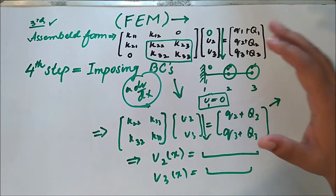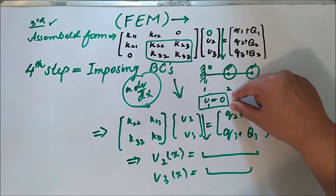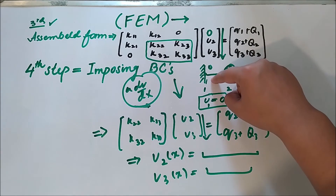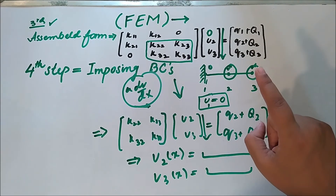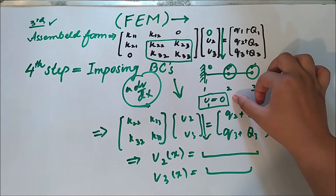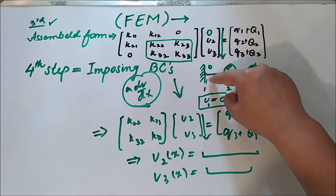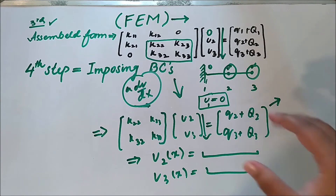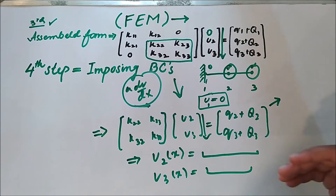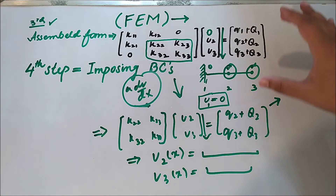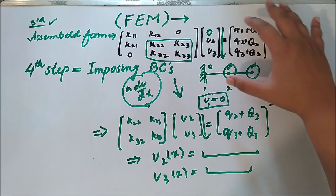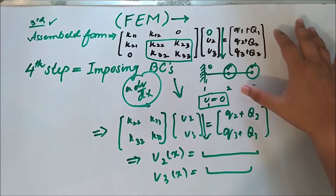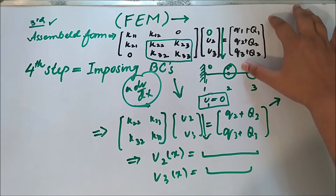In the fourth step, when we impose the boundary condition, I am assuming only one boundary condition — that at this point the displacement is zero. One thing to remember: it is not always the case that displacement at one end is zero; it can or cannot be zero depending on the situation and the problem. But when a displacement at any end is equal to zero, the whole global system will be condensed.